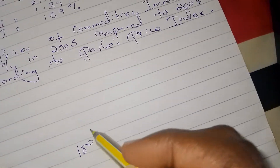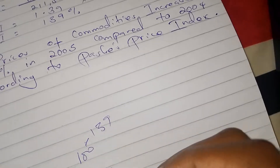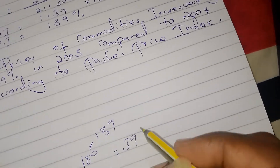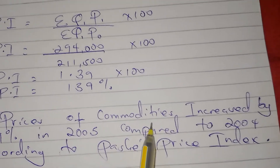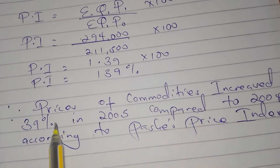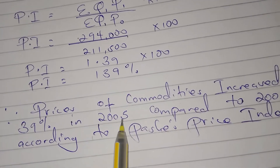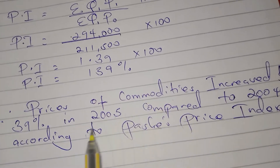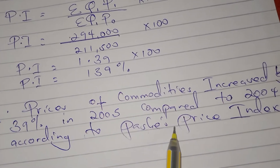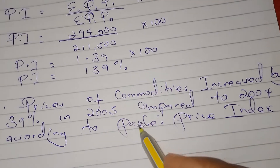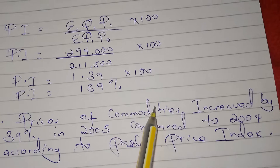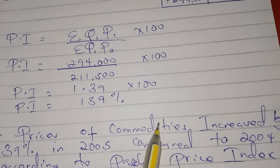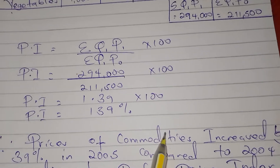The normal price index for the base year is 100, so it increased from 100 to 139 — therefore there was an increase of 39 percent. This means prices of commodities increased by 39 percent in 2005 compared to 2004 according to the Paasche price index. This is how we calculate the price index using the Paasche method.